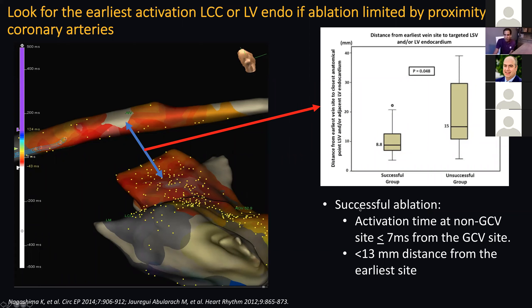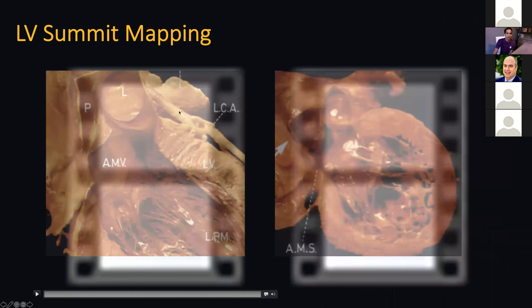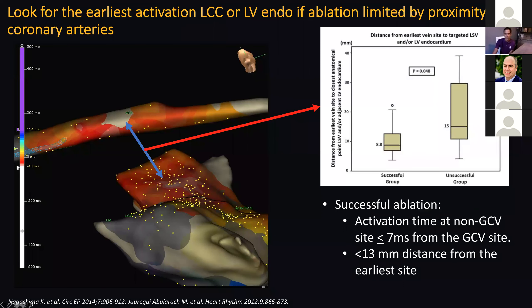There are some predictors of whether ablation at remote sites is going to be successful. You can look at the activation time of these remote sites — if the activation time is within seven milliseconds of the GCV site or the epicardial site, you're likely able to get it. If it's a short distance from the site of origin, you're also likely able to get it. If the distance is two centimeters, you're not going to be able to get a burn through and through.